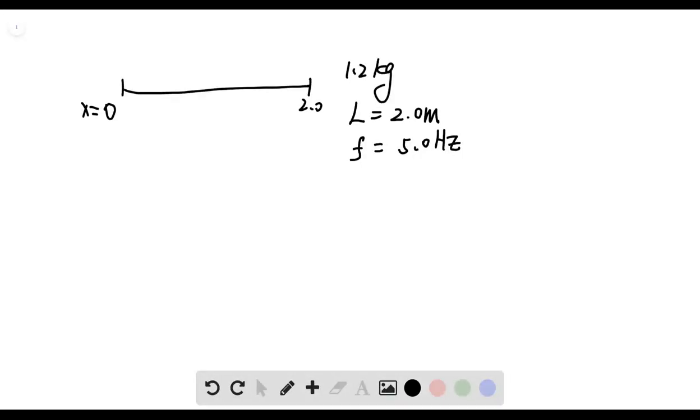So in this question, we have this rope that is 1.2 kg, and it's fixed between two ends that's 2 meters apart, and it has a frequency of 5 Hz when it's oscillating in the fundamental mode.